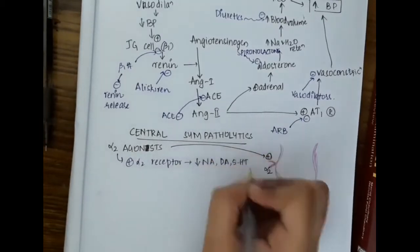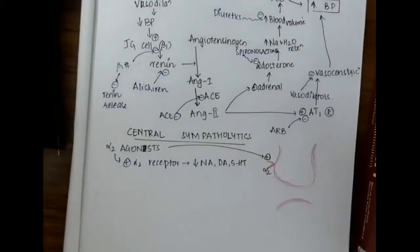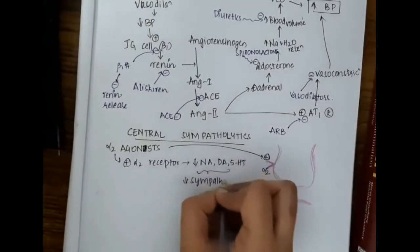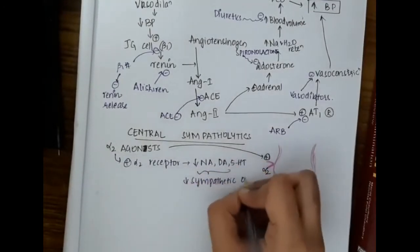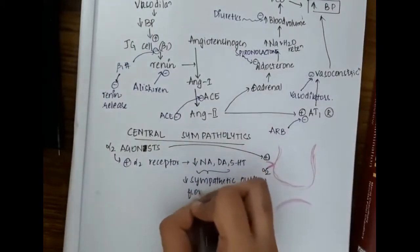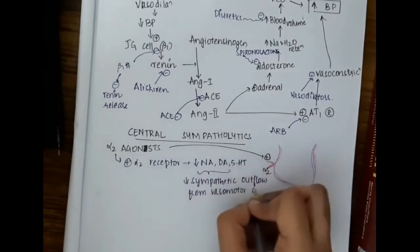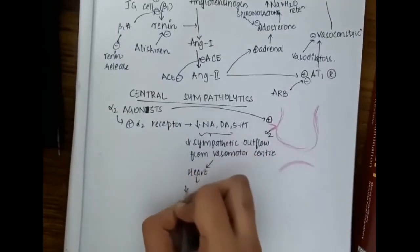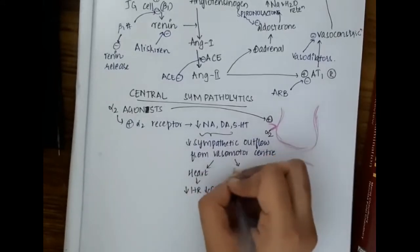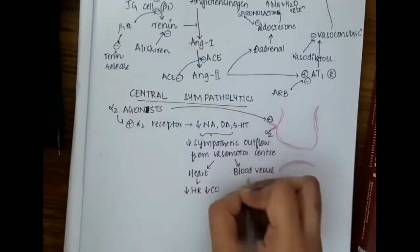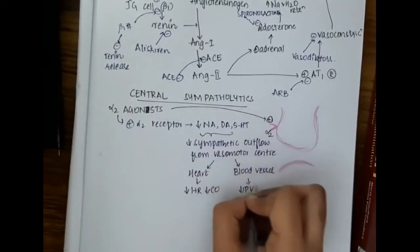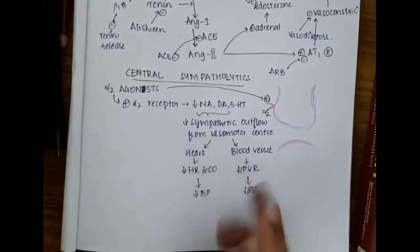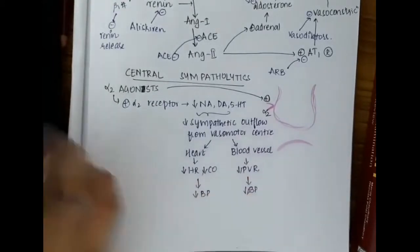When there is decreased release of noradrenaline, dopamine, and 5-hydroxytryptamine, this decreases the sympathetic outflow from the vasomotor center. In the heart, it decreases heart rate and decreases cardiac output. In the blood vessel, it decreases peripheral vascular resistance, finally decreasing BP.